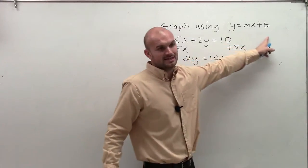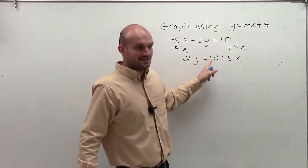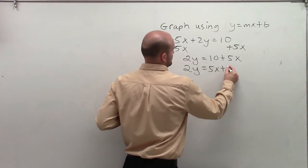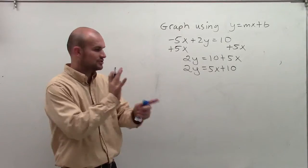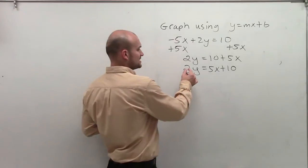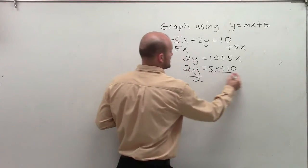However, I want to write it in this format. So I'm going to put the 5x in front of the 10. Commutative property of addition. Just switch them around. Now I need to get rid of the 2. Since 2 is being multiplied by the y, I divide by 2.